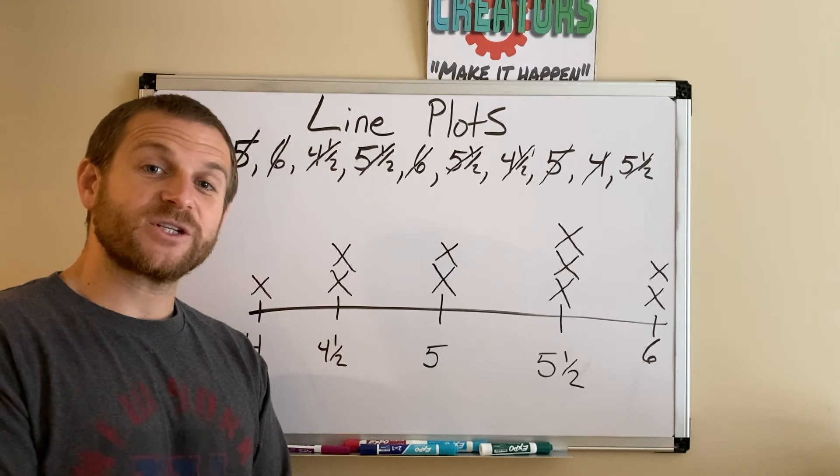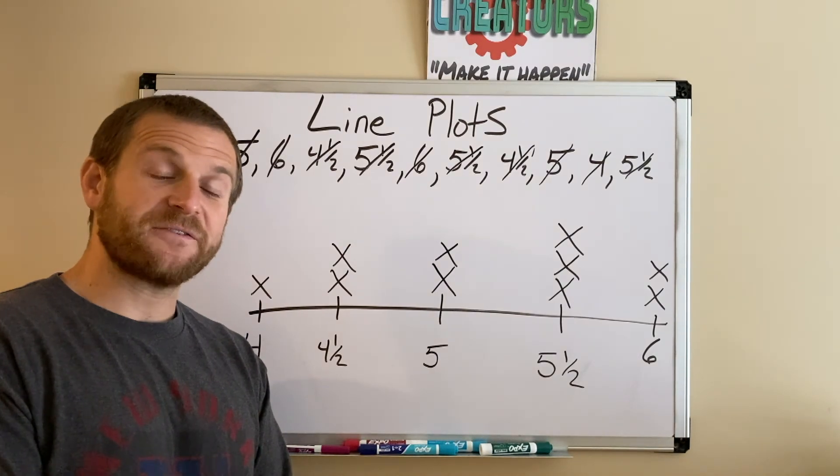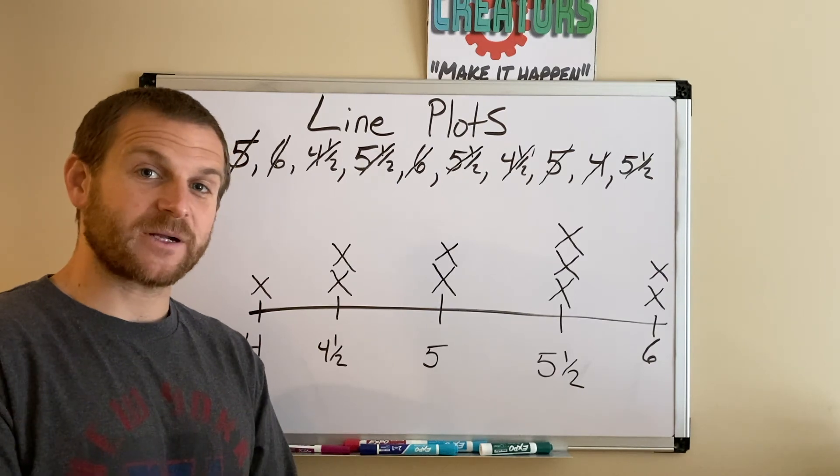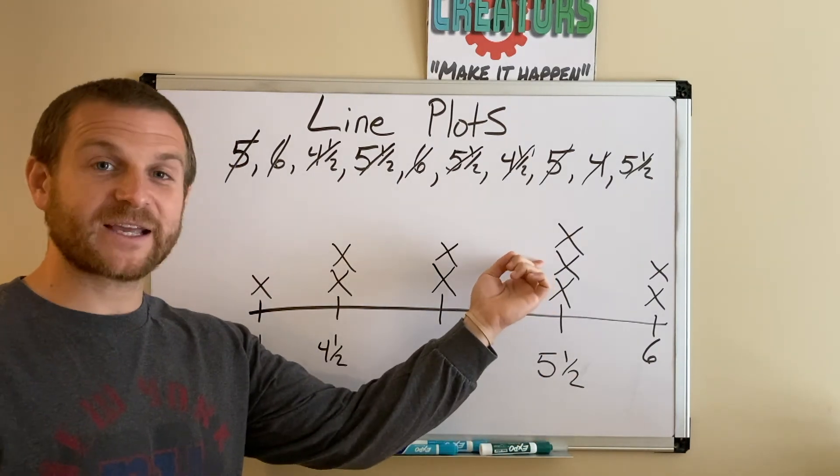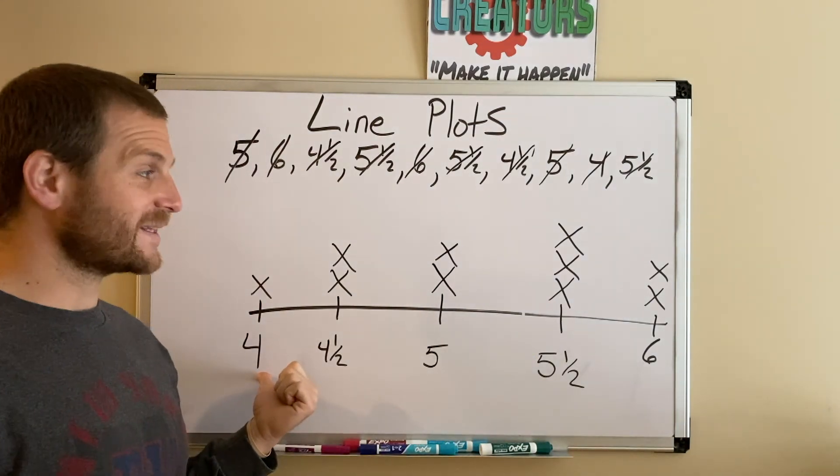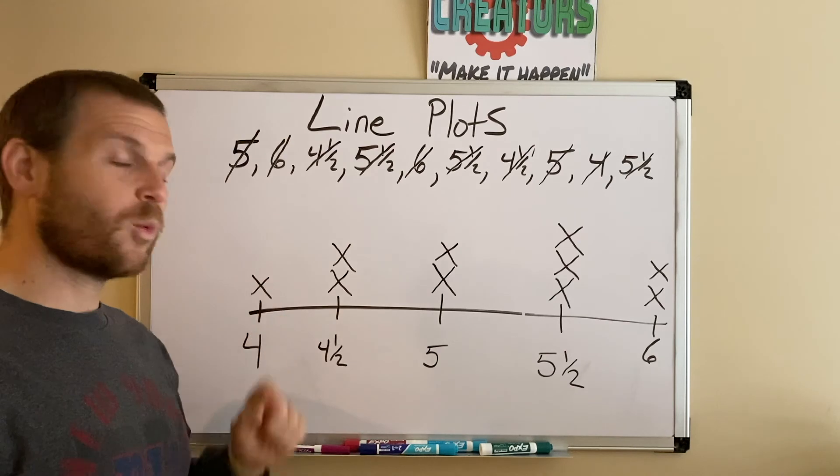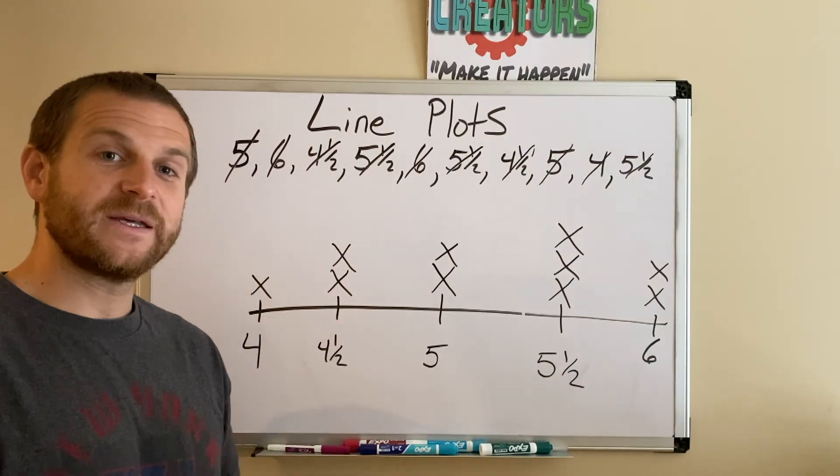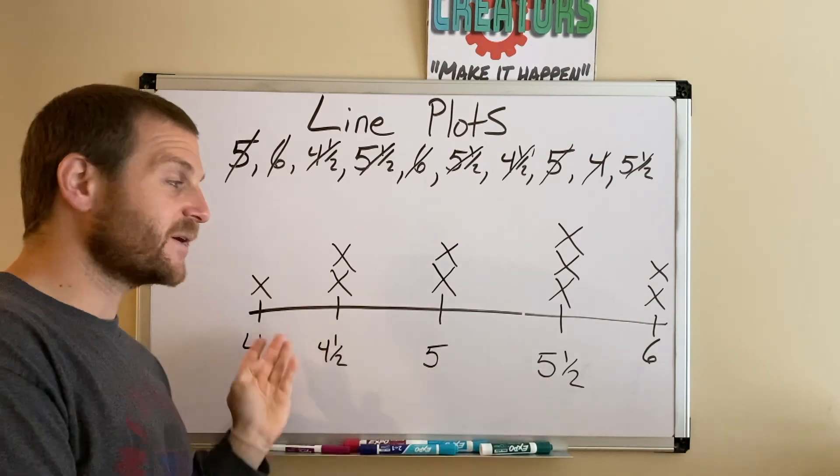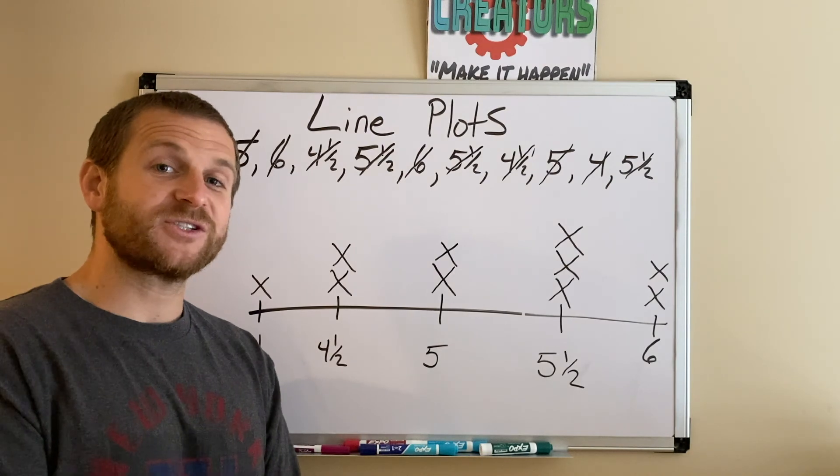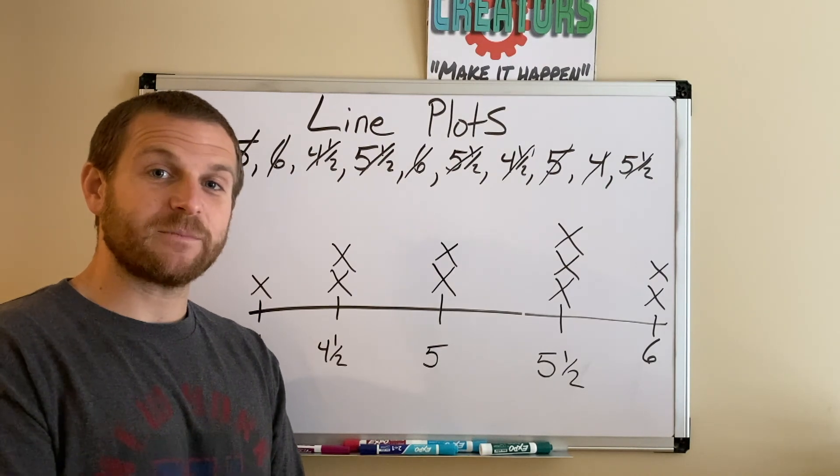One of the other common questions is what was the difference between the most popular and the least popular? I look at the most popular - 5½ seconds had three people. 4 seconds was the least popular with only one person. So just a simple subtraction problem: 3 minus 1, the difference between the most popular and the least popular was two people. Those are some of the most common questions that you're going to see when looking at line plots.